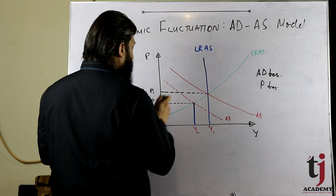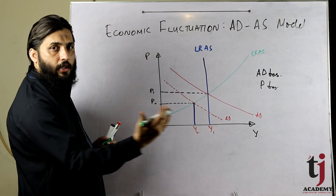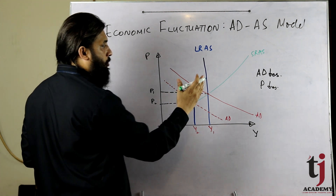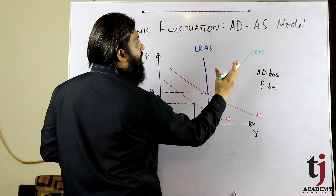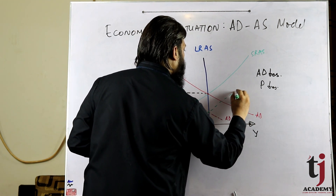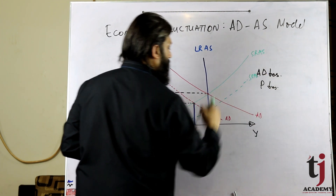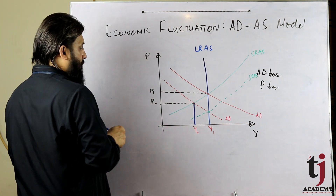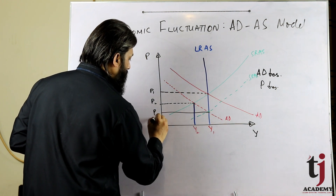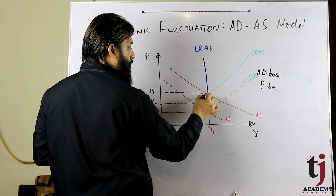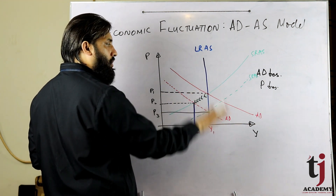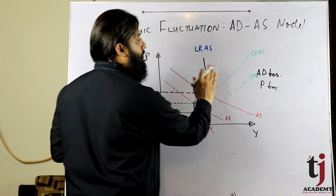Labor supply and demand curves shift. The supply curve undergoes a rightward shift. We come to the short run aggregate supply curve, and here you have a new equilibrium point with a new price level P3. You can see the movement of the economy — demand movement occurs, and then wages being sticky means no immediate change.